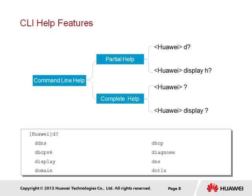We can see an example where 'D' is followed by a question mark, giving a list of possible completions. When the command is followed by a space and a question mark, the complete help function is used, which will list keywords associated with the command and a simple description of the function.